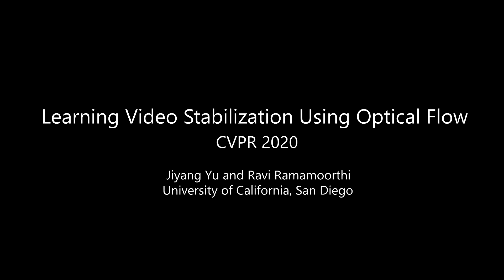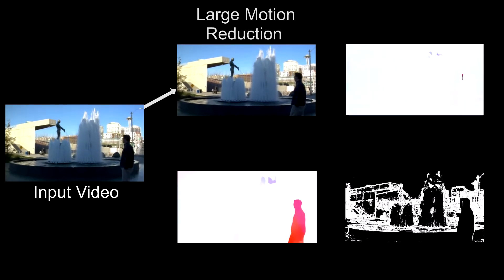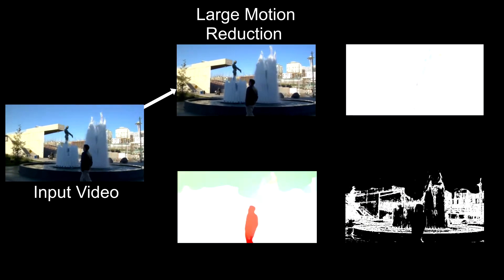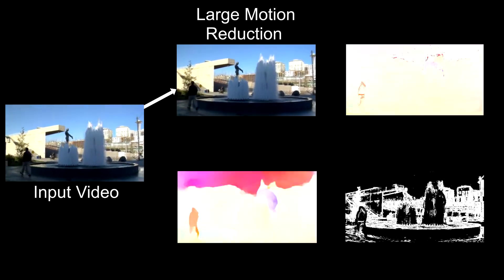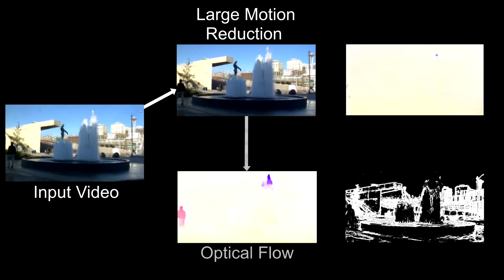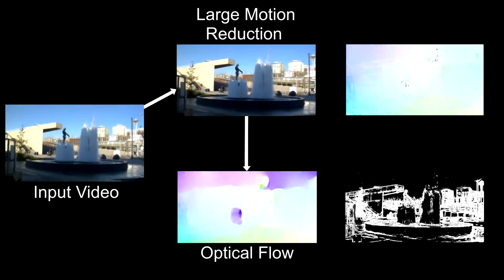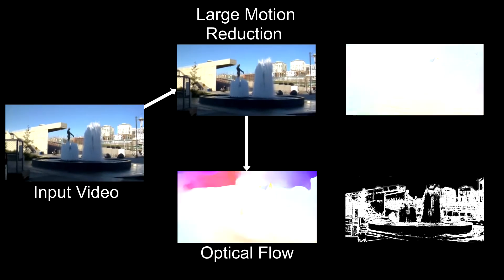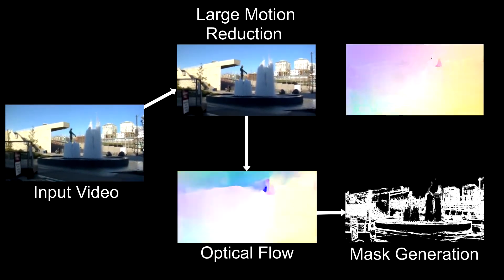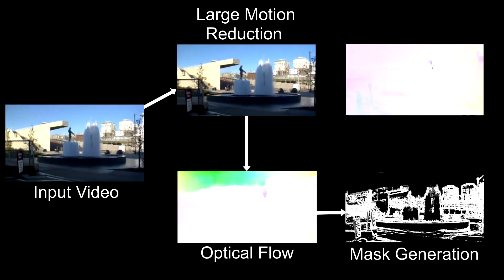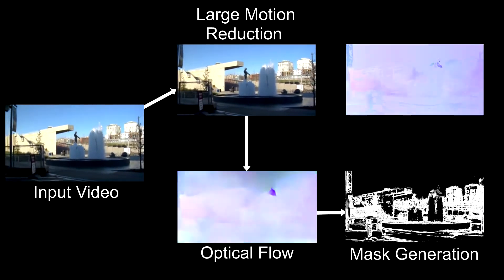Our method is a deep learning-based video stabilization method. We first remove the large motion from the video by rotation and translation. Then we use FlowNet2 to compute the optical flow. We compute a mask for each frame indicating the valid regions in the optical flow.